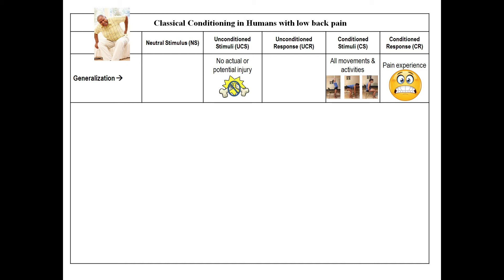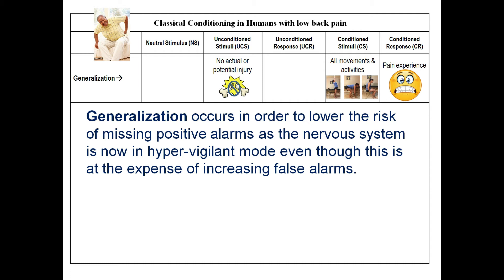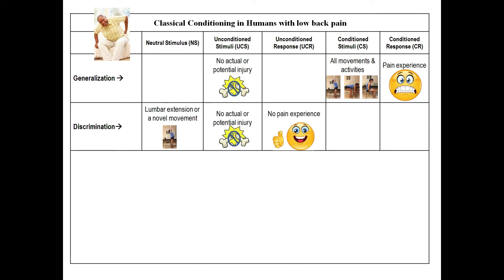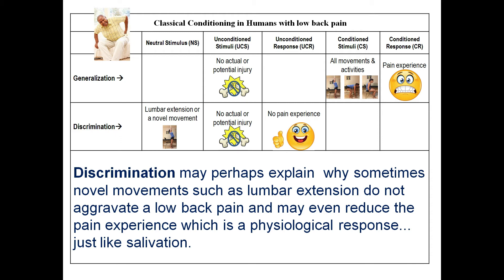Generalization in pain: when there's no actual or potential injury anymore, all movements and activities result in a CR, the pain experience — whether it's flexion, extension, rotation, sitting, or walking. Generalization occurs in order to lower the risk of missing positive alarms, as the nervous system is now in hypervigilant mode, even though this is at the expense of increasing false alarms. Discrimination may explain why sometimes novel movements, such as lumbar extension, don't aggravate low back pain and may even reduce the pain experience.